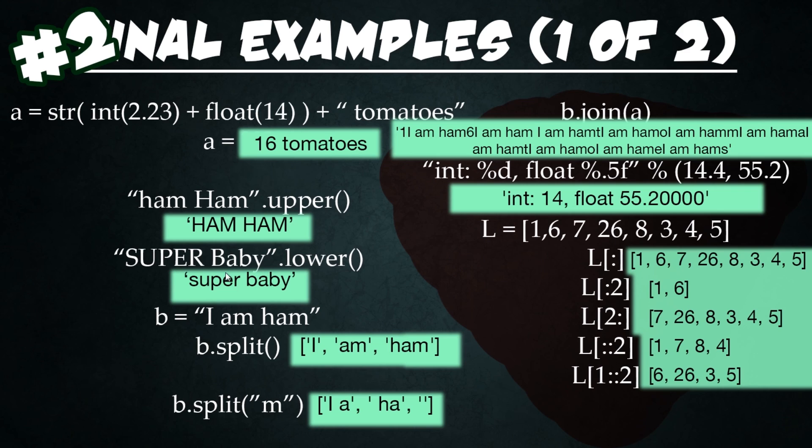Next we have another string operation called split, and this is going to by default split the spaces up. So anywhere there is a space within I am ham, it's actually going to separate those elements out. And so that's why we're outputting a list of I, another element am, and then another element ham. Then we can actually feed in stuff into that split as an argument, and we can feed in m and it'll actually split up and remove all the m's out of it.